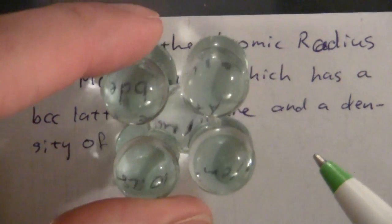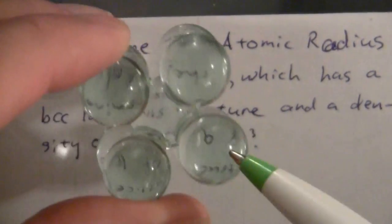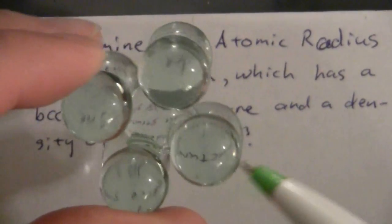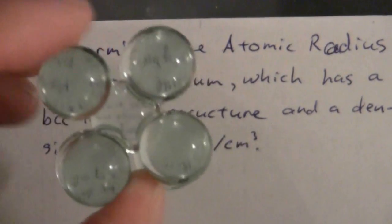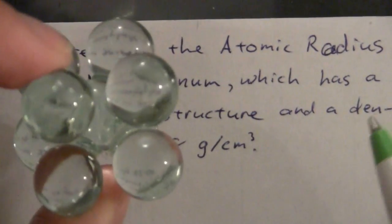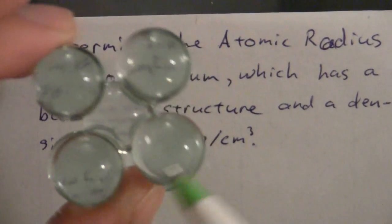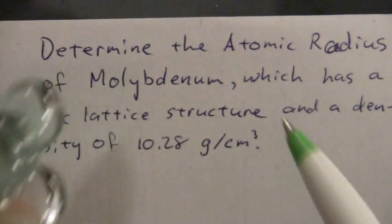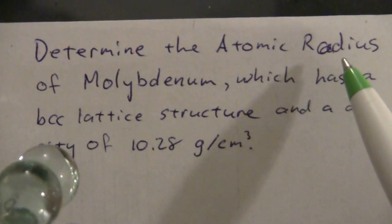It's body-centered cubic which looks something like this where you have on each of the eight lattice points an atom and then a lattice point right in the center of the cube. So if I can get the dimensions of this unit cell from molybdenum I can use that to calculate the radius.